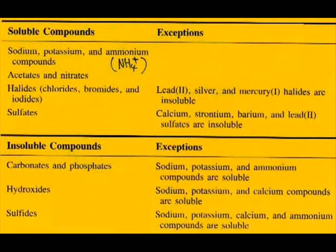Now the second half of our little cheat sheet here basically talks about the ions that are going to be mostly insoluble. You'll see that on the left-hand side you have the hydroxides and the sulfides, and if anything is paired with those, you can pretty much rest assured that it's going to be insoluble. But just like the soluble half of the chart, there are exceptions — the exceptions with the hydroxide and the sulfides are when they're paired with the group 1A metals. And as you go further down, you'll see the carbonates and the phosphates, which are also mostly insoluble — again, the exception being when they're paired with the group 1A metals or ammonium. And that's basically the little cheat sheet for your solubility rules.